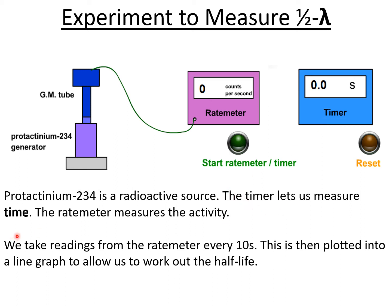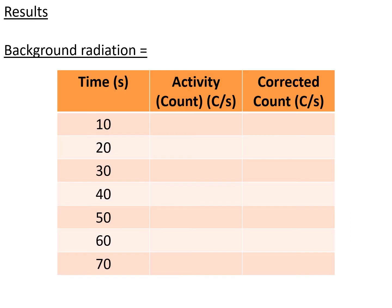The timer lets us measure time, the rate meter measures the activity, and what we do is take readings from the rate meter every 10 seconds. This is then plotted into a line graph to allow us to work out the half-life. I'll run through this experiment for you when we get back into class.